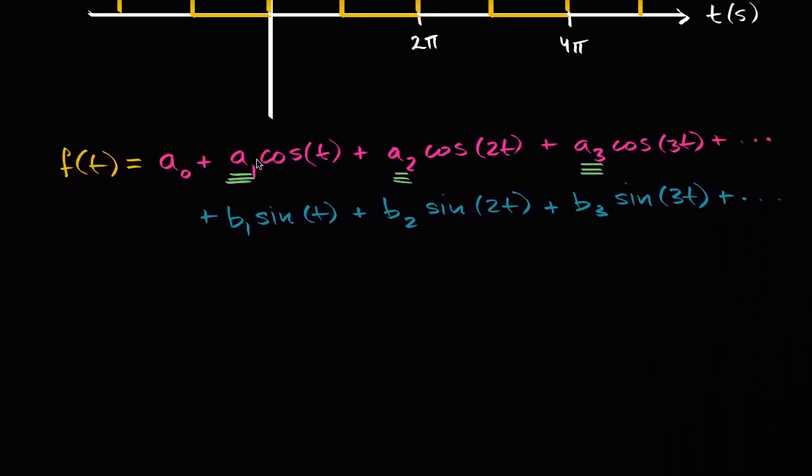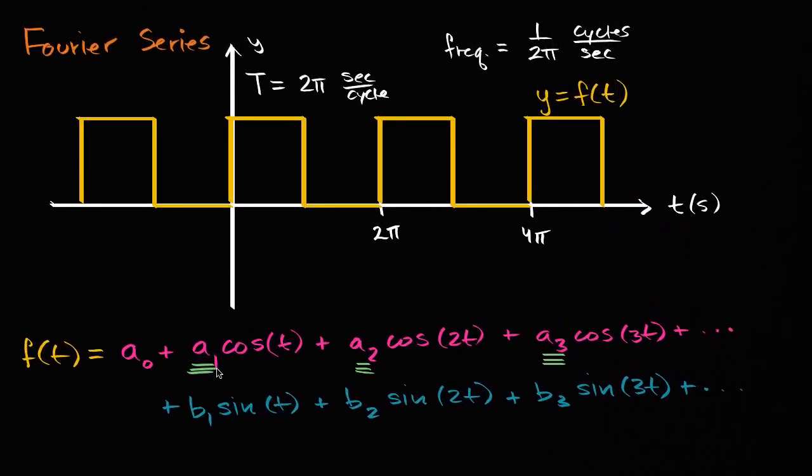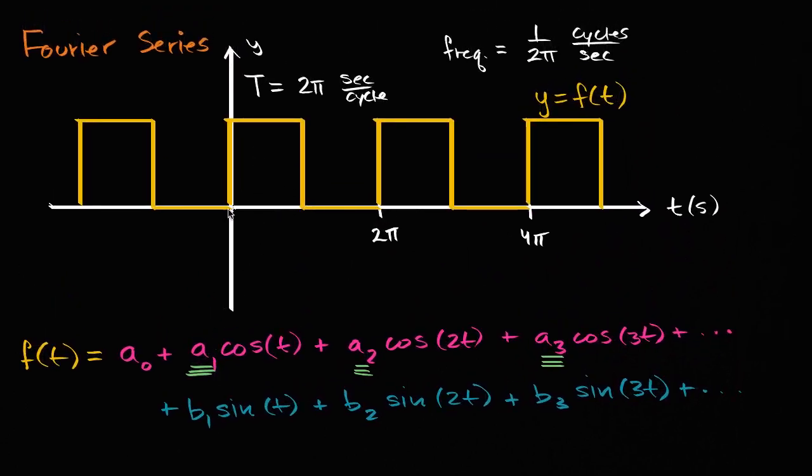So the first thing I wanna do is establish some truths with definite integrals. I'm gonna focus over the interval zero to two pi over this video and the next few videos because the function we're approximating has a period of two pi. It completes one cycle from zero to two pi.